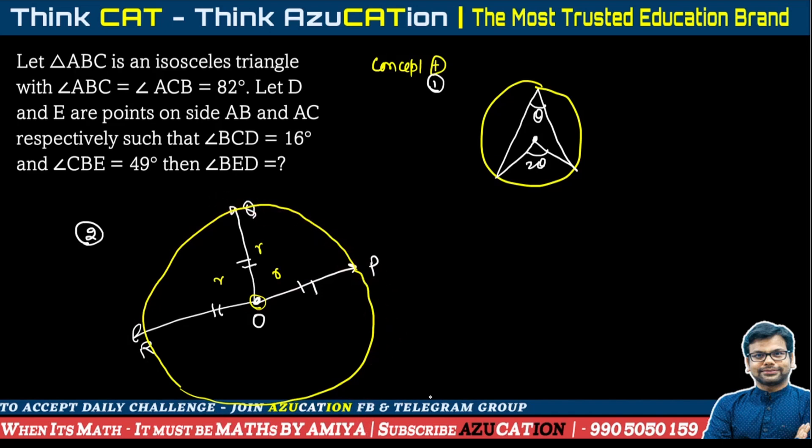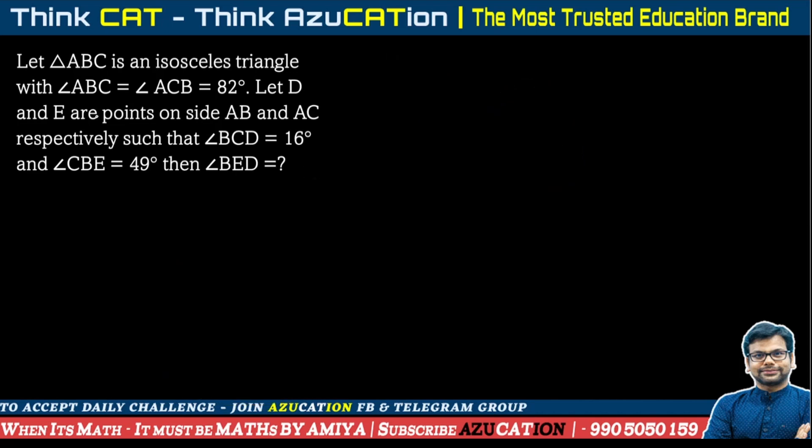Let's start with the question. First, draw the diagram. Triangle ABC is an isosceles triangle with the base angles B and C at 82 degrees. So, we have triangle ABC. This point is A, this point is B, this point is C and our base angles are equal. This is 82, 82. So we can say this angle is 16 degrees to make it 180 degrees.